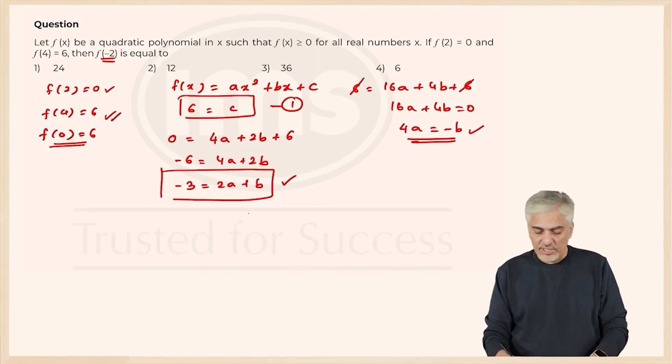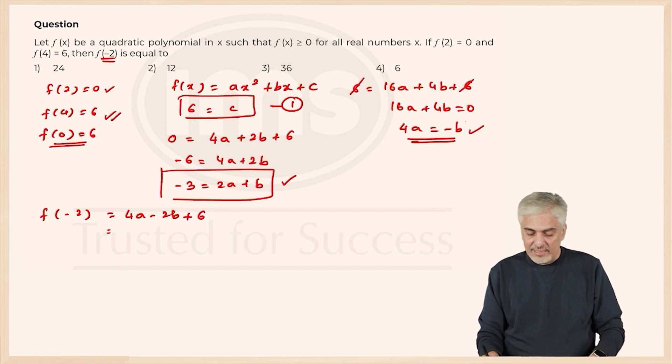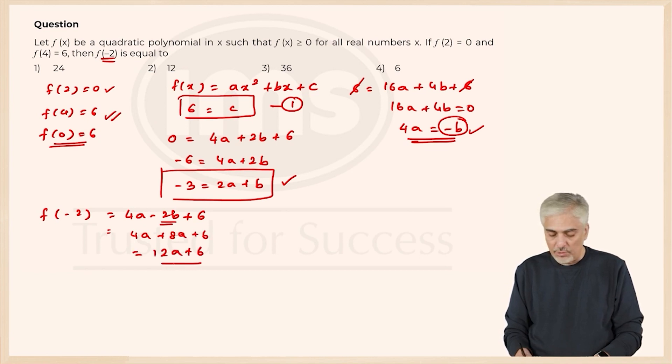Now take both these equations and solve them to find the values of a, b, c and we will get the function. What is f of minus 2? It will be 4 a minus 2 b plus c, plus c is 6 we know that. What is minus b? Minus b is 4 a. So minus 2 b will become 8 a. So 4 a plus 8 a plus 6, that will be 12 a plus 6 is what I want to find.